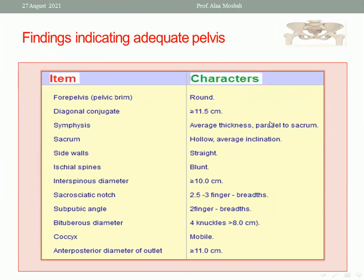A normal or adequate pelvis has the following features: the inlet is round or slightly oval, diagonal conjugate more than 11.5 cm, symphysis pubis of average thickness, sacrum hollow with average inclination, sidewalls straight, ischial spines blunt and not prominent, interspinous diameter equal to or more than 12 cm. The sacrosciatic notch is 2.5 to 3 finger-breadths, subpubic angle admits 2 finger-breadths, biotuberous diameter admits 4 knuckles and is more than 8 cm, coccyx is mobile, and anteroposterior diameter of the outlet is equal to or more than 11 cm. These are the minimum requirements for an adequate pelvis.